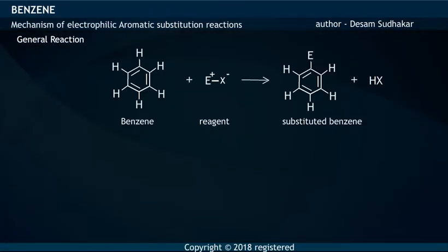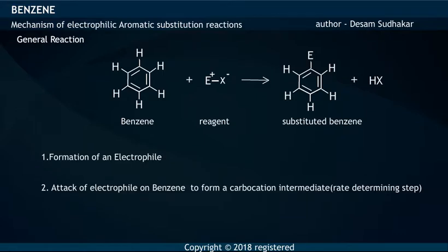The mechanism of Electrophilic Aromatic Substitution reaction involves three steps. Step 1: Formation of an Electrophile. Step 2: Attack of an Electrophile on the Benzene Ring to form a Carbocation Intermediate. Step 3: Loss of a Proton to reform the Aromatic Ring.